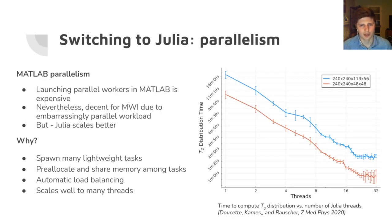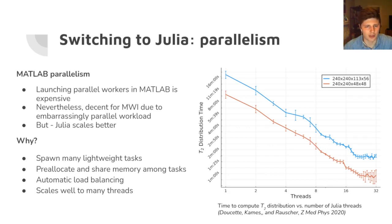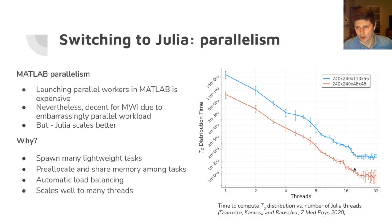Finally, we found that parallelism in MATLAB was actually quite a bit slower than Julia. MATLAB's version of parallelism is to launch more MATLAB processes and pass data between processes — it's actually decent for myelin-water imaging because it's an embarrassingly parallel workload, but still Julia manages to scale better. The reason is that you have lightweight tasks where you can pre-allocate and share memory between tasks, automatic load balancing, and you can just stay within the same process. It ends up scaling well to many threads, and interestingly on this log plot of time versus threads, this is a 16-core machine but it still benefits from over-subscribing threads — which the MATLAB version simply does not. In Julia you can get about 20% extra speedup just by over-subscribing your threads.